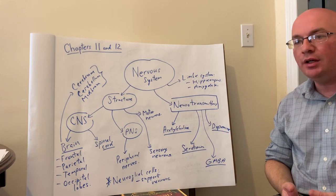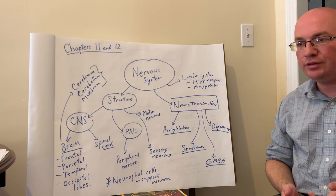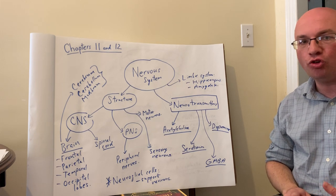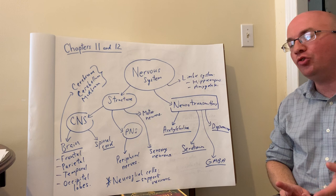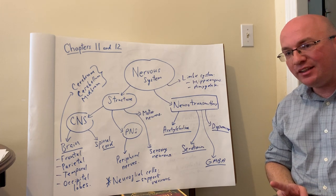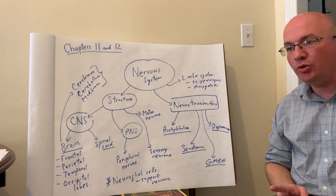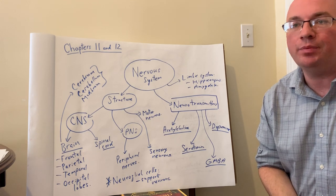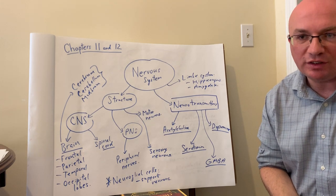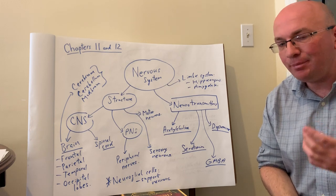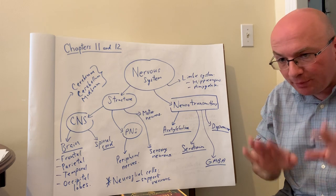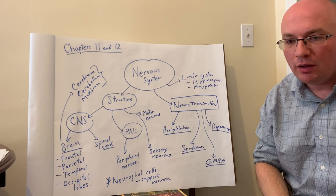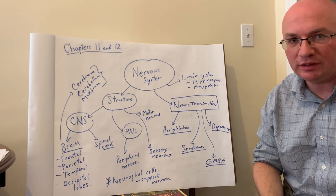Dopamine is another very important neurotransmitter found throughout the brain and other parts of the body. It plays a role in the reward center and addiction. At high elevated levels of dopamine, a person can get psychosis or become psychotic — these are symptoms of schizophrenia, where a person has auditory or visual hallucinations and delusions. Sharply decreased levels of dopamine in certain parts of the brain damages the movement control centers and causes Parkinson's-like symptoms.